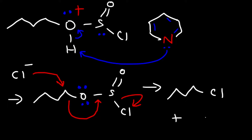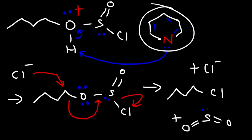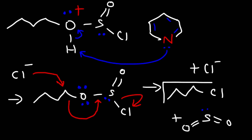We also get sulfur dioxide as a side product — sulfur has a lone pair giving it a bent shape. There is also the chloride ion and a protonated pyridine. That's how you show the mechanism for conversion of an alcohol into an alkyl chloride using SOCl₂ in pyridine.